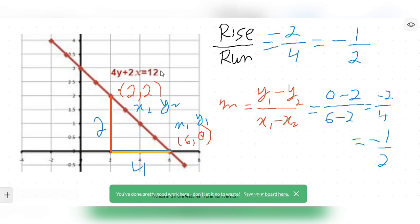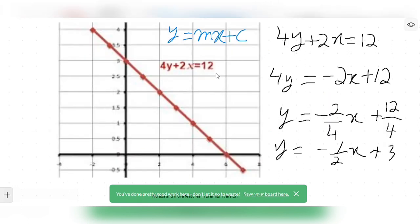Now the third method. So in this third method suppose this equation is given and now we have to see how to find the gradient just using the equation of this straight line. So this is the equation.